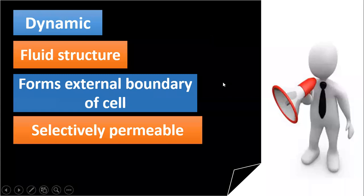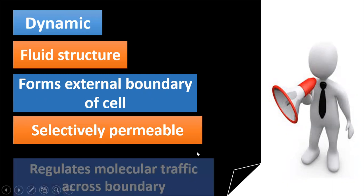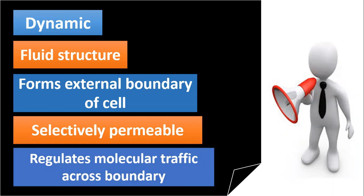It is also known as a selectively permeable membrane, which means that it allows only certain kinds of molecules to pass inside and outside of the cell. It also regulates molecular traffic across the boundary, and this function is related to the selectively permeable property. So it can control the molecules at a particular time.